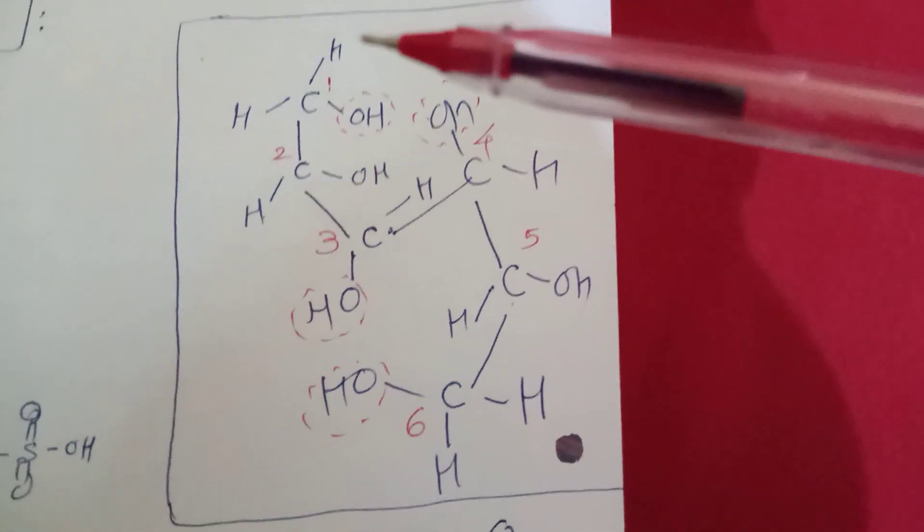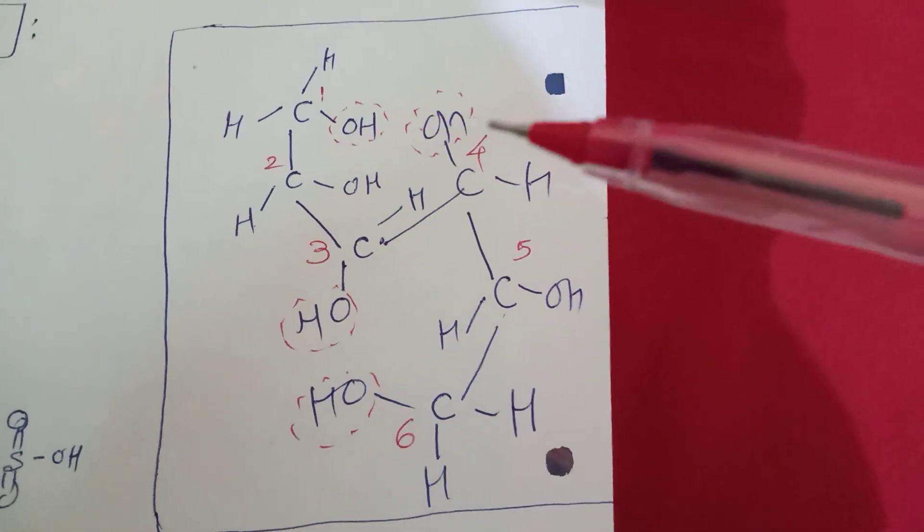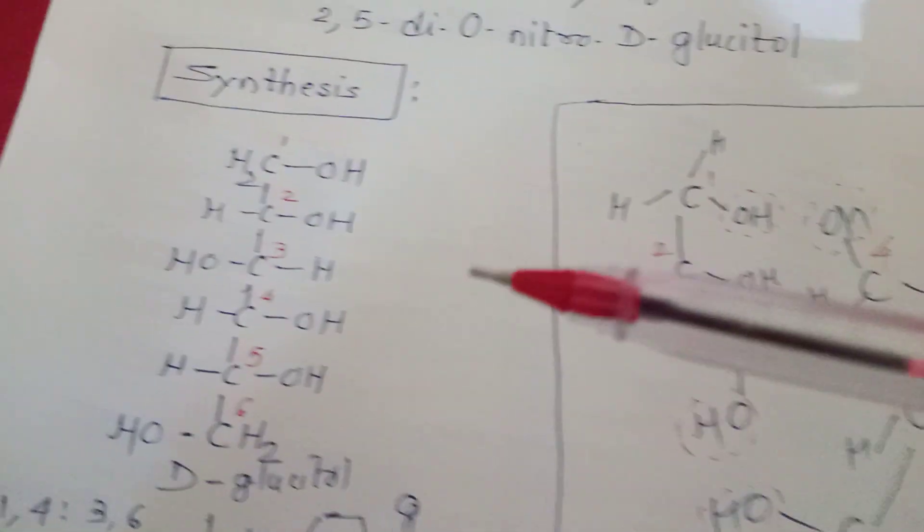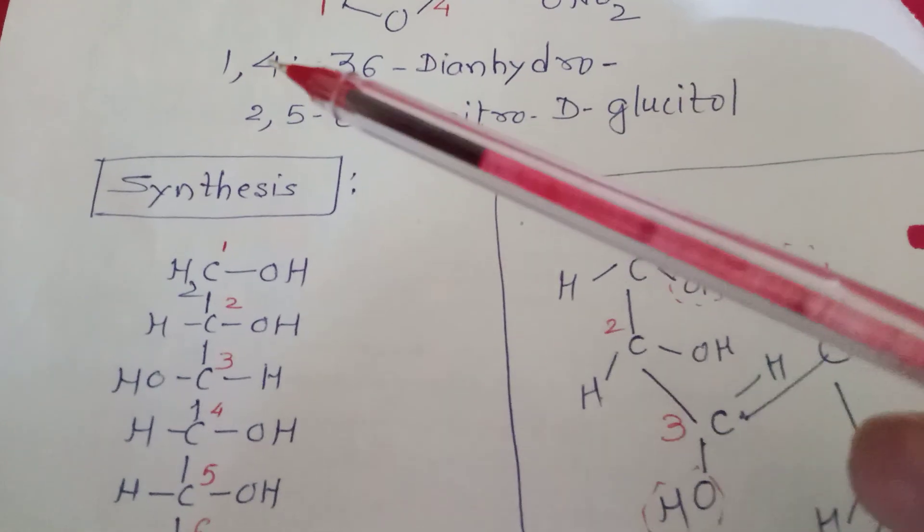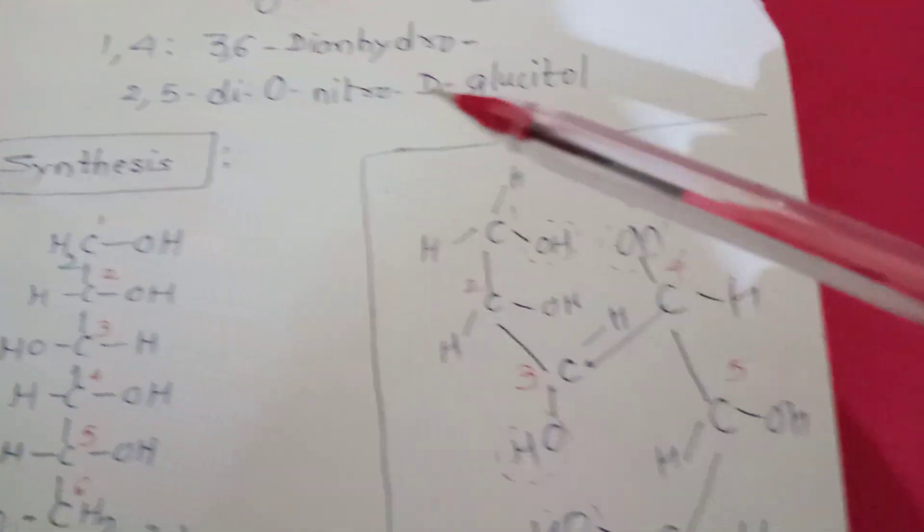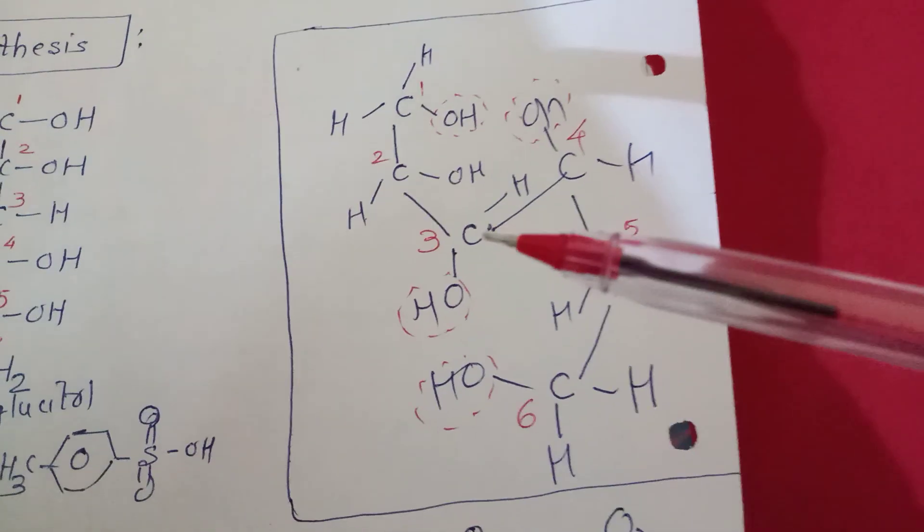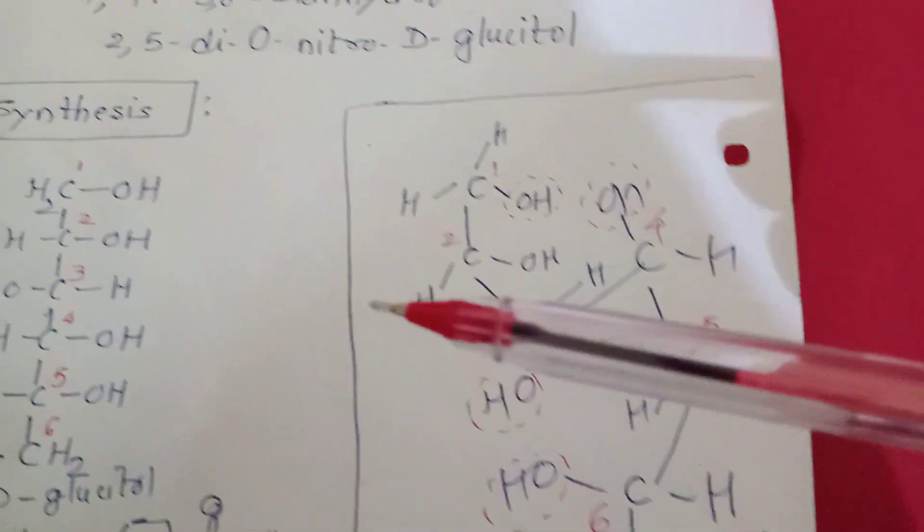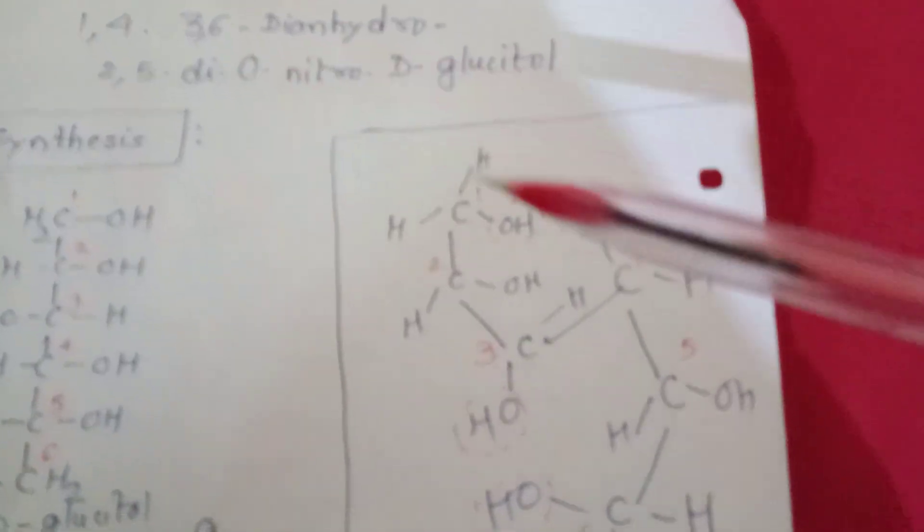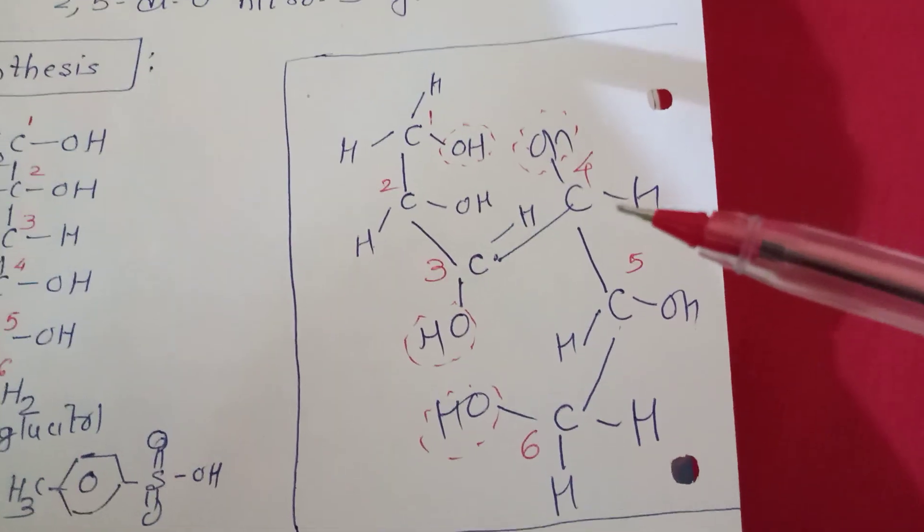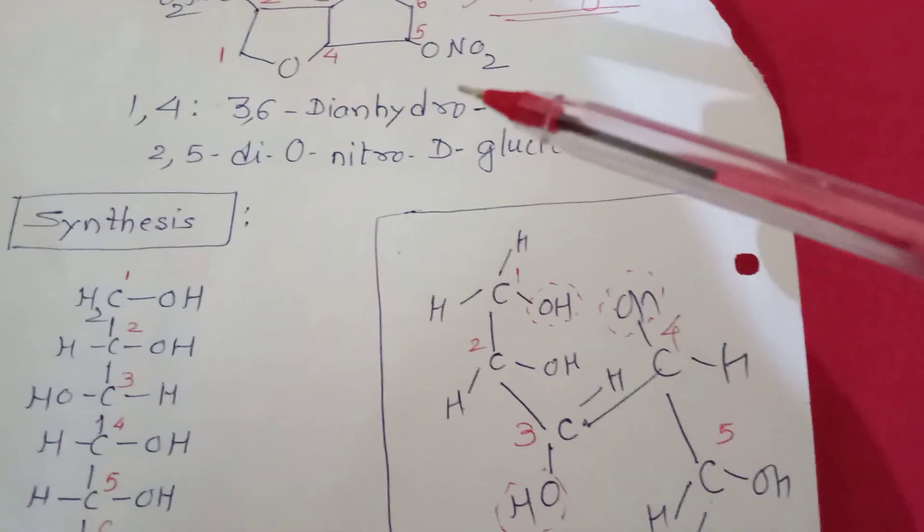So a water molecule is liberated from the reaction of carbon number one and four, that's why it is 1,4. And a second water molecule is generated between carbon number three and six, so it is 3,6. Two water molecules are released, so it is dianhydro.